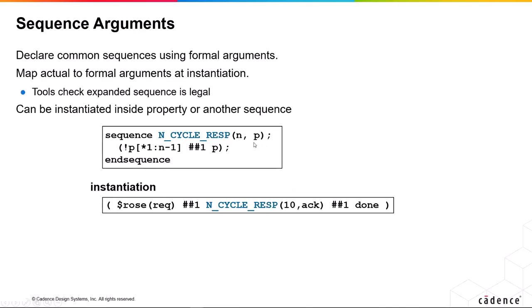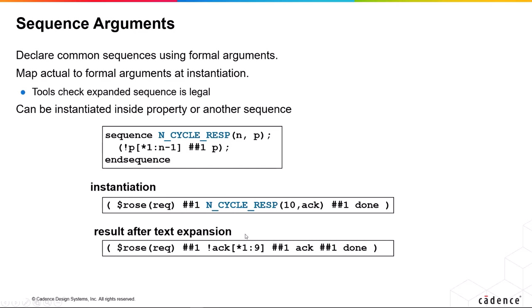So if you can imagine what happens here is a text expansion now, once we instance this sequence. And this is what we end up with here. So we end up with the sequence N_cycle_resp with the arguments 10 and ACK coming out as this expression here: not ACK, one to nine consecutive repetition, hash hash one ACK.